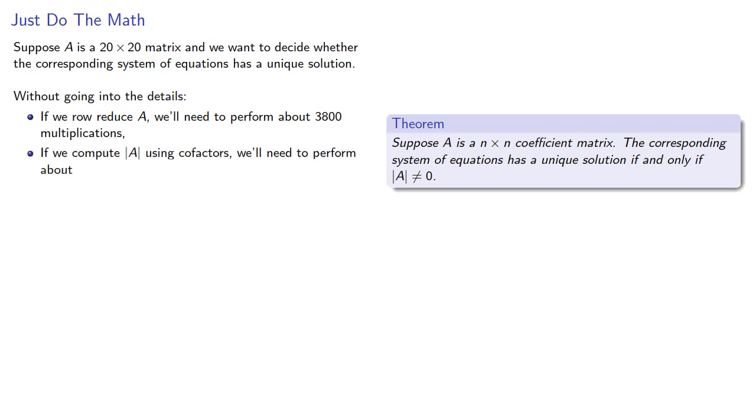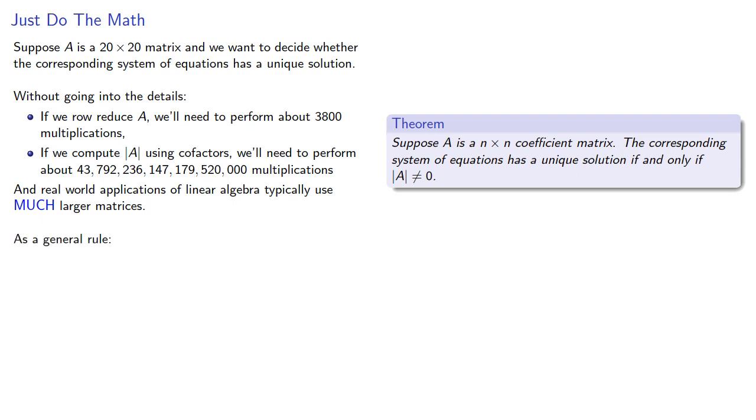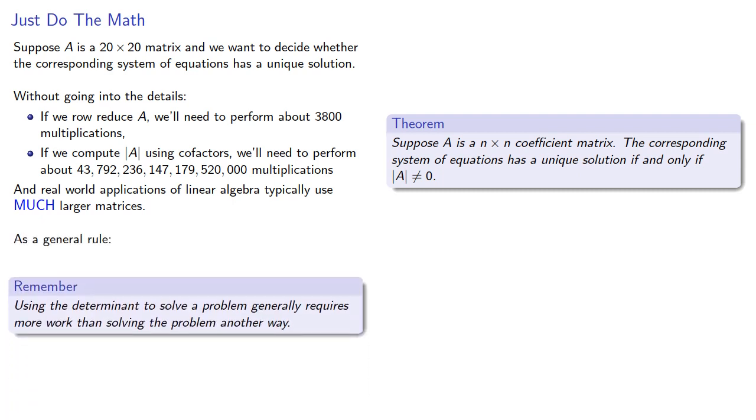If we compute the determinant of A using cofactors, we'll need to perform a lot more multiplications. And real-world applications of linear algebra typically use much larger matrices. And so, as a general rule, using the determinant to solve a problem generally requires more work than solving the problem another way.